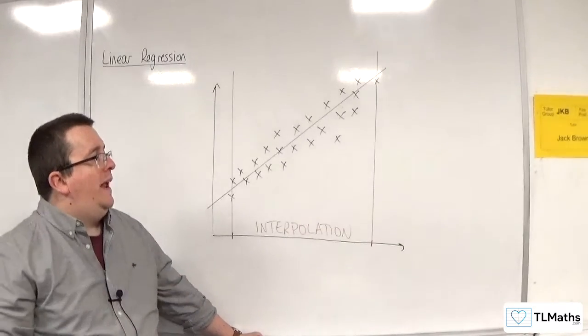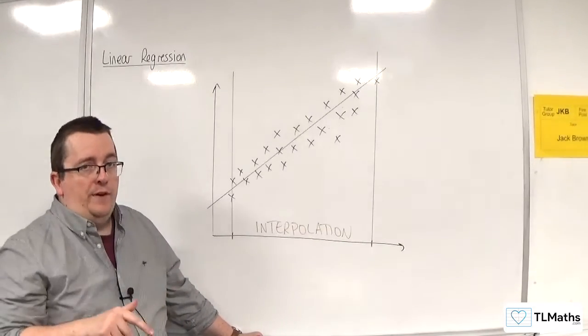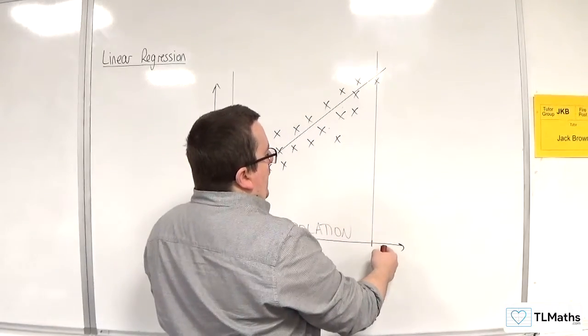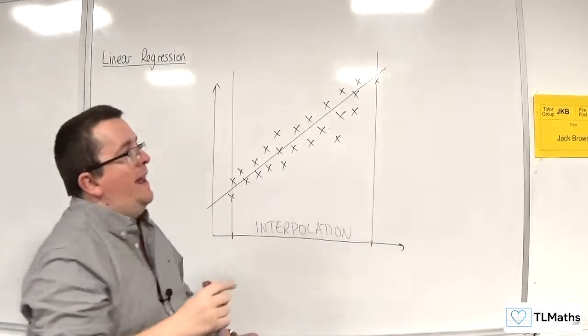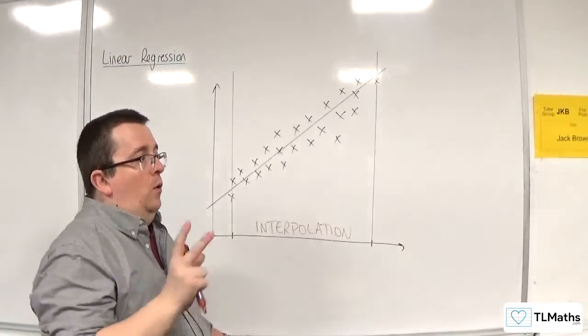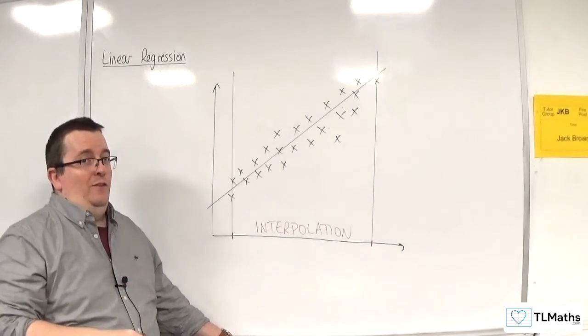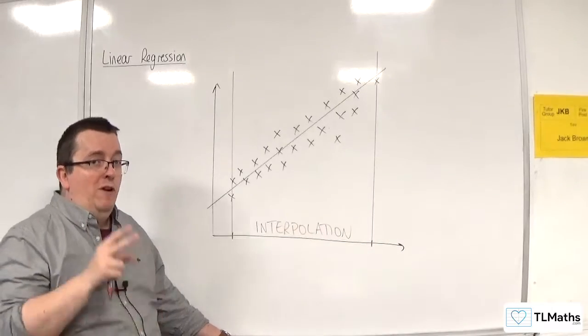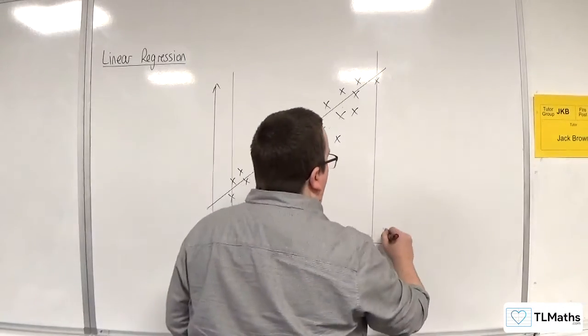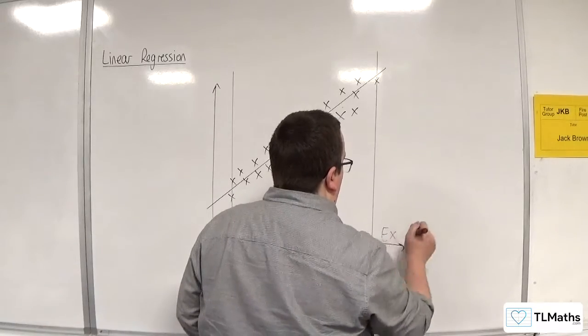If you choose any values that are outside of this, so if I choose a value over here and I go up to my line and use it, then it may well be that it gives you an accurate prediction, or it might not. The problem is it's unreliable once it is outside of those ranges, and we refer to that as extrapolation.